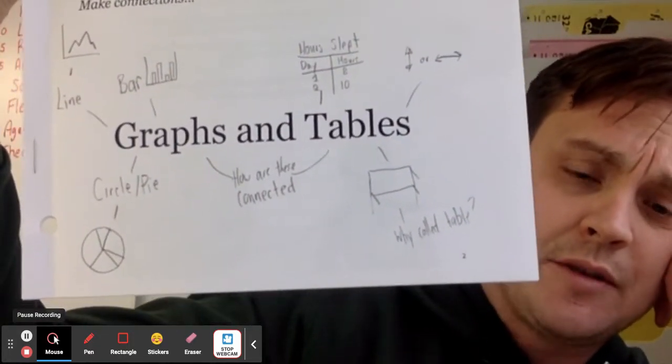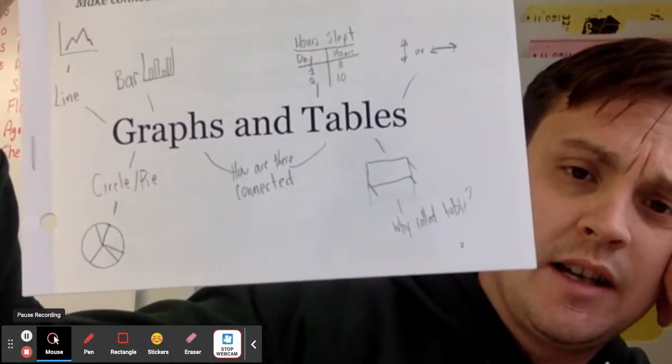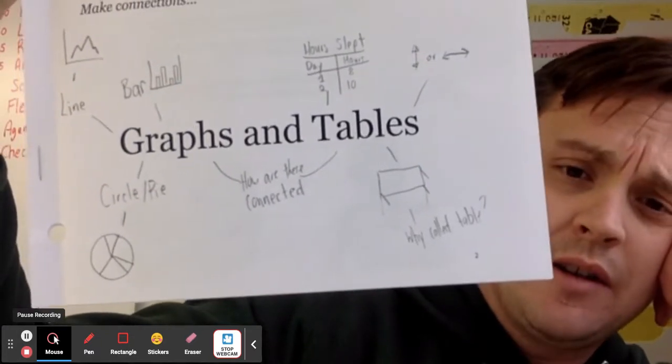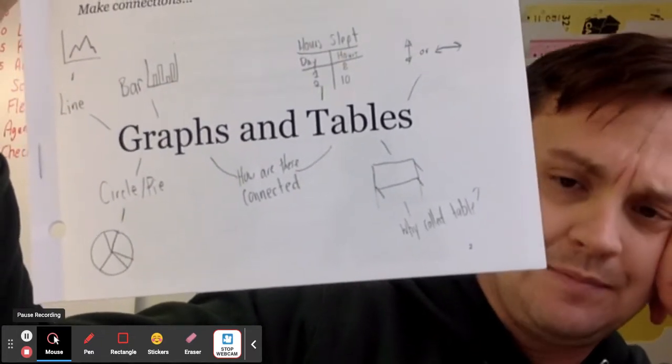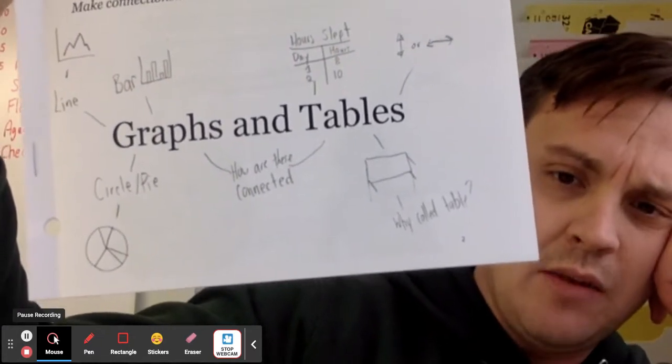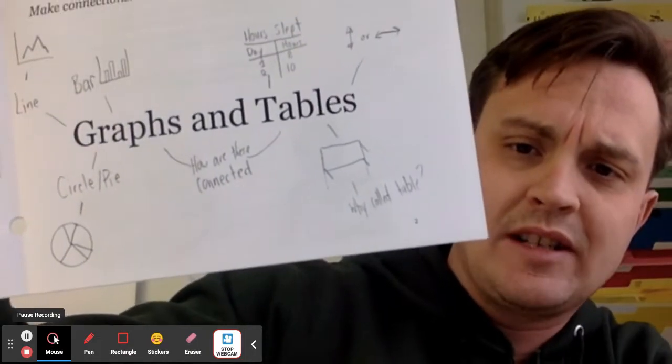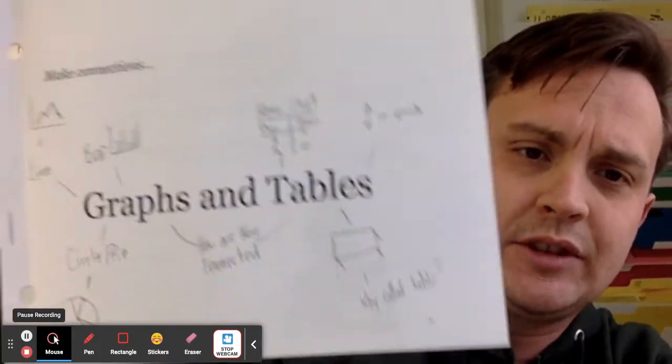There are also circle graphs or pie charts. I wrote myself a question: how are they connected, and why are they called a table? I even drew myself a normal table.